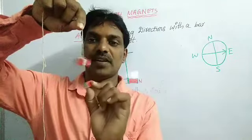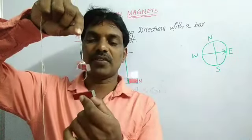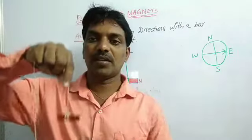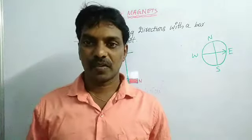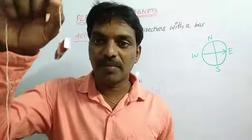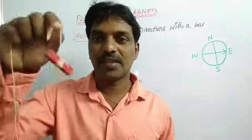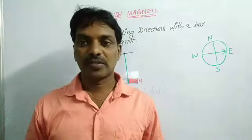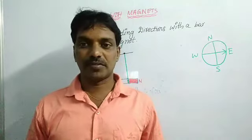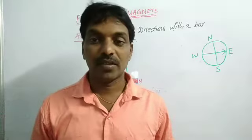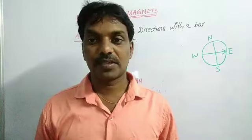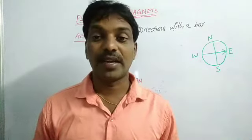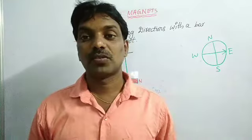That is why we cannot find out exact directions of a place if we keep another magnet near the compass. Only the magnetized needle should be inside the magnetic compass. I think you understood what is a bar magnet and what is a magnetic compass.